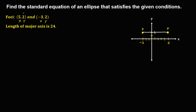The formula for the horizontal ellipse is: (x minus h) squared over a squared, plus (y minus k) squared over b squared, equals 1. This is the formula we're going to use to find the standard equation of this ellipse.